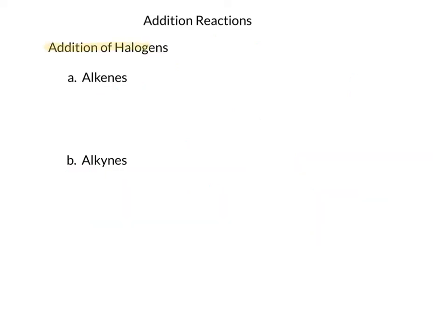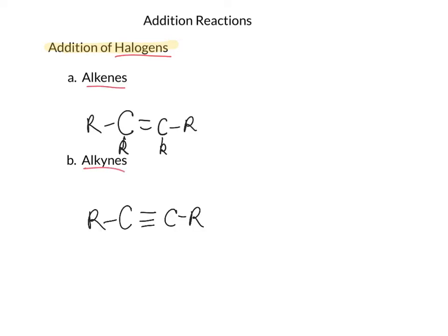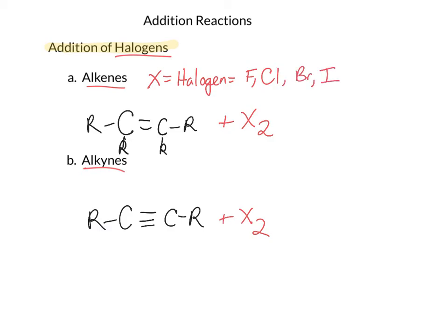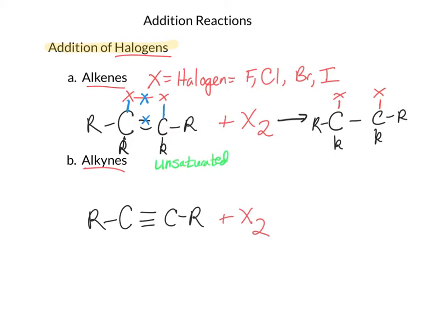Now let's look at the addition reaction of halogens to alkenes and alkynes. This reaction is very similar to hydrogenation. We'll be using X to model the halogens, which can be fluorine, chlorine, bromine, or iodine, and we'll be adding them across the double bond. We spread those two X's above the double bond and model this by making a bond, breaking a bond, making a bond, and breaking a bond, so that we end up with a halogenated alkane. We have again gone from an unsaturated compound to a saturated compound, and this process is called halogenation.